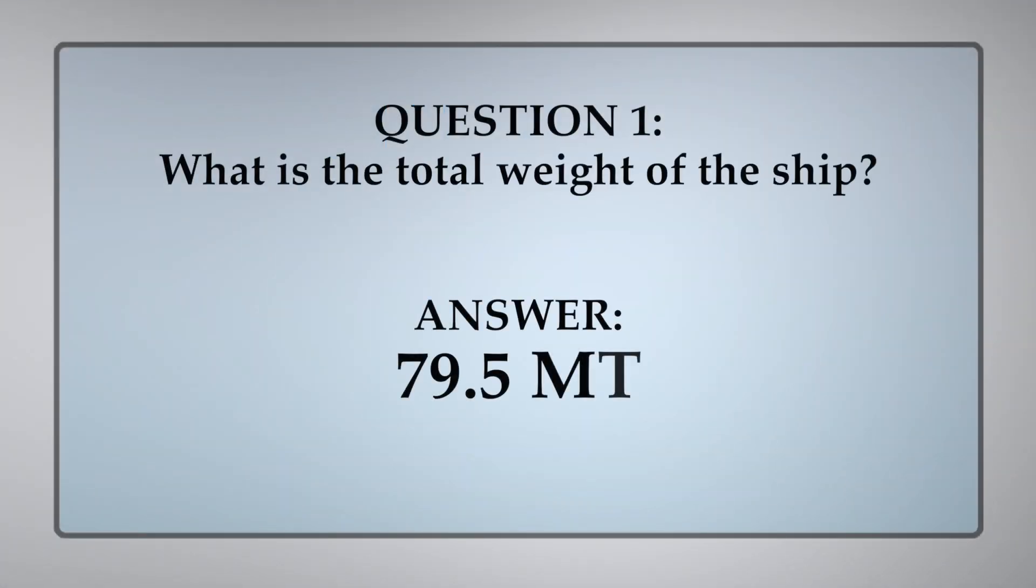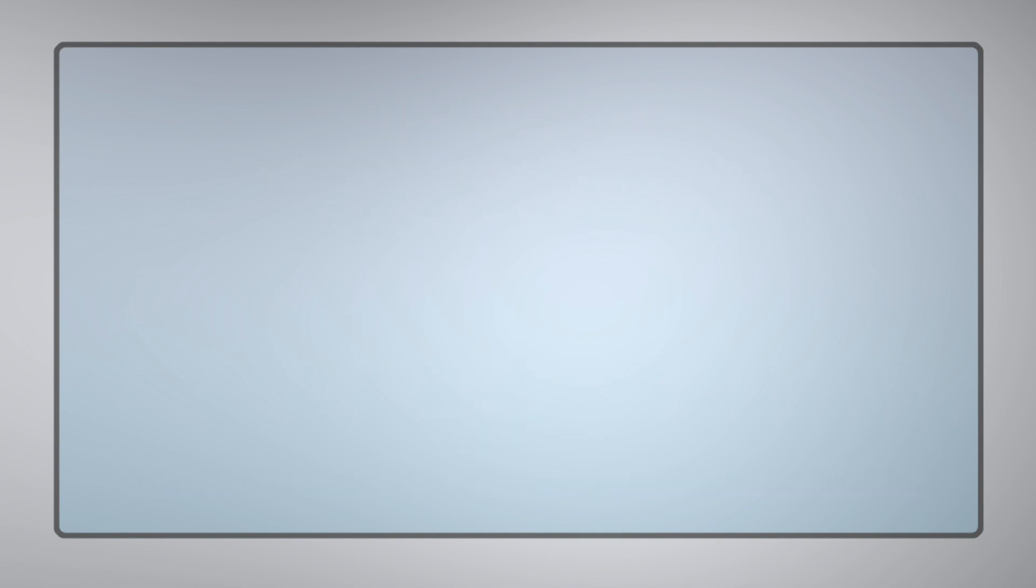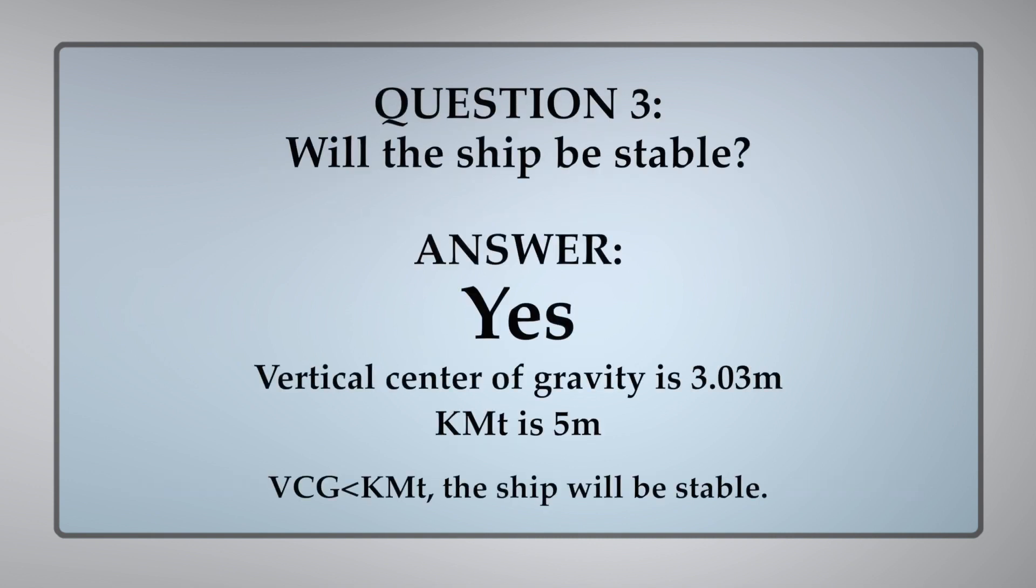The total weight of the ship is 79.5 MT. The answer to number two is 3.03 meters. The answer to number three is yes, the vertical center of gravity is at 3.03 meters, and KMT is at 5 meters. VCG is less than KMT, and the ship will be stable.